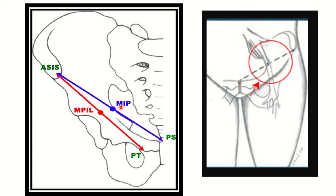On the other hand, there is an imaginary line extending from the anterior superior iliac spine to the pubic symphysis. The midpoint of this line is the mid-inguinal point. In the second picture, the midpoint between the anterior superior iliac spine and the pubic symphysis corresponds to the femoral artery, which is the correct landmark for arterial blood collection.